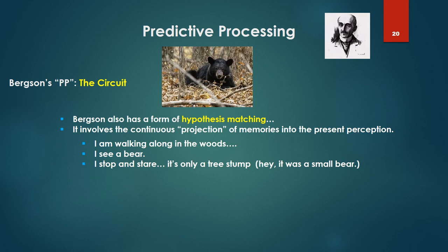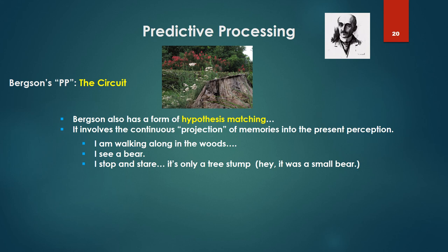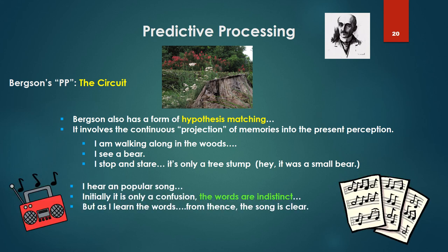So let's go back to Bergson for a second. Bergson also has a form of hypothesis matching or his own form of predictive processing. It involves the continuous projection of memories into the present perception. And I put projection in quotes. I'm walking along in the woods. I see a bear, very clearly see a bear. I stop and stare. But it's only a tree stump. It was only a small bear. Or I hear a popular song. Initially, the words are only a confusion. They're indistinct. But as I learn the words, either by listening many times or cheating and finding the text, from thence on, the song is clear.